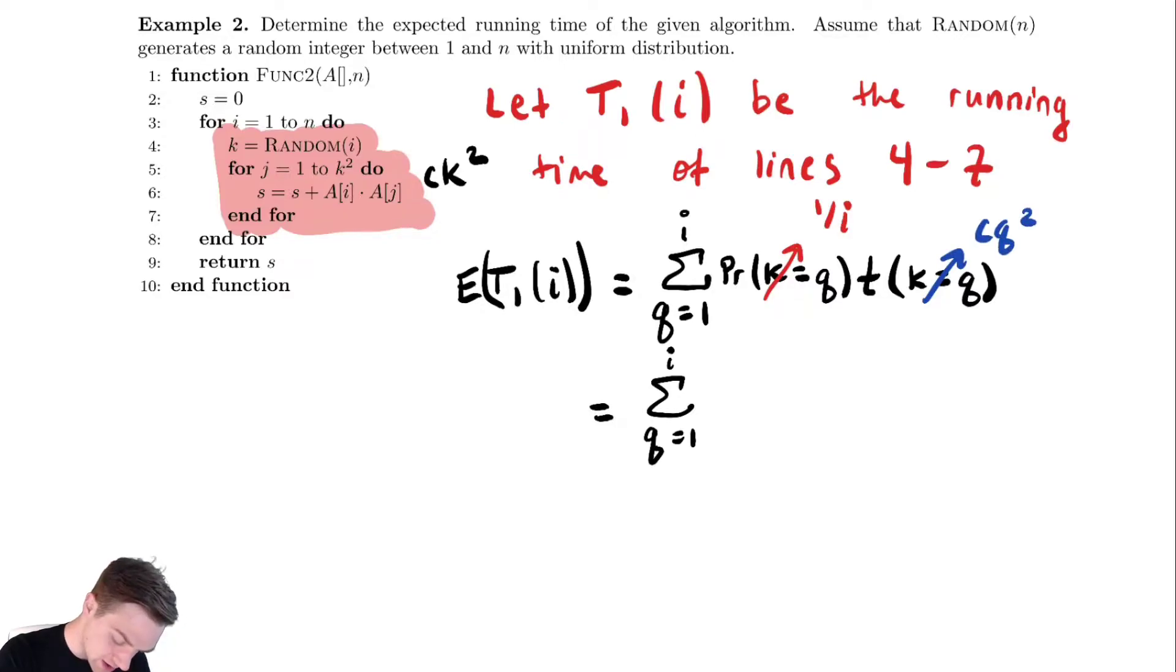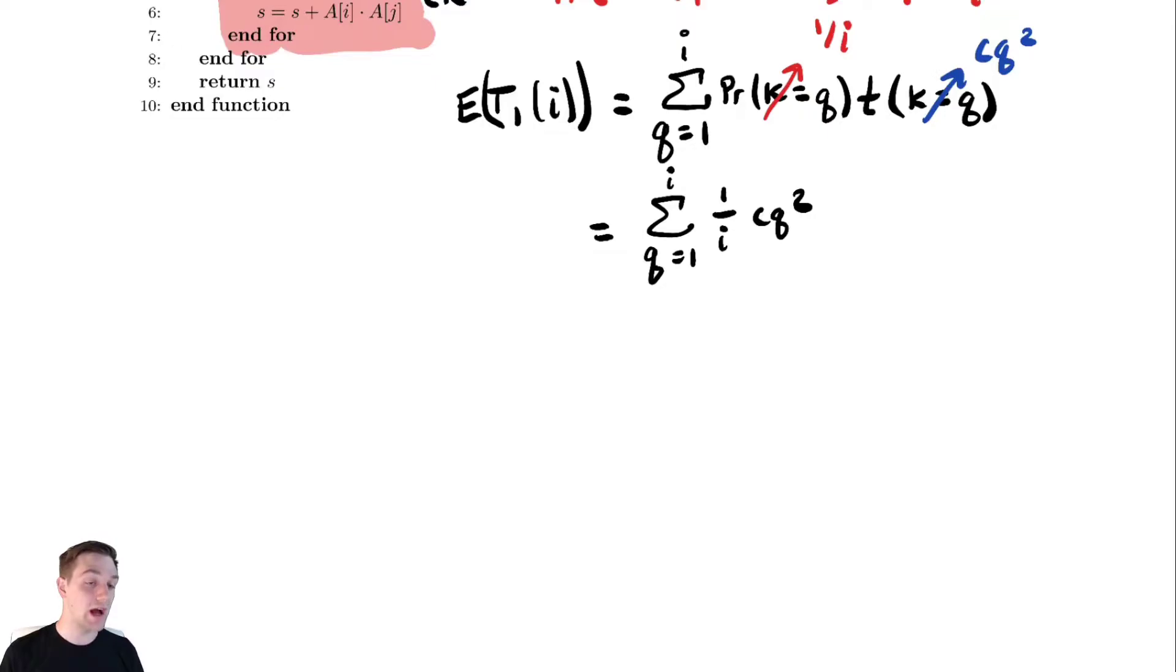So using that information, we have 1 over i times cq². I can factor out the 1 over i and the c because neither of them has anything to do with q. This equals c over i, the sum from q equals 1 to i of q².